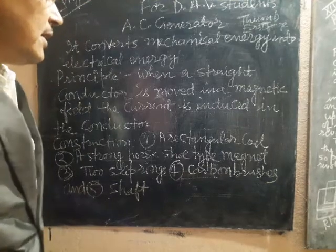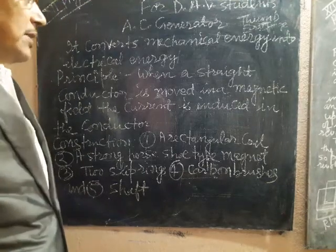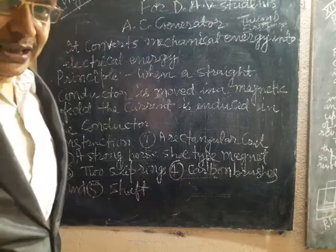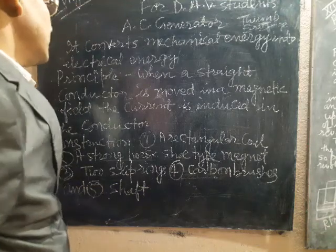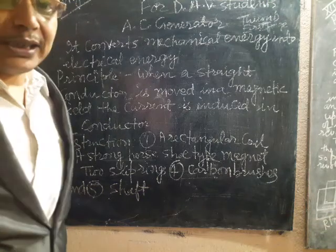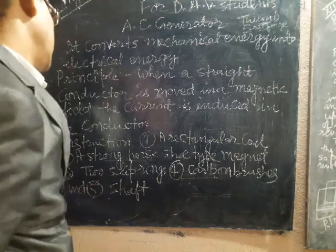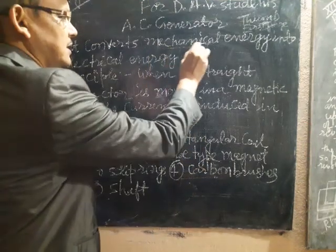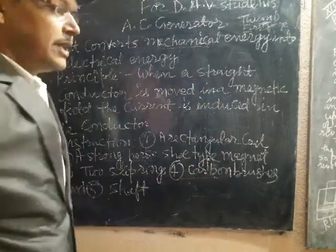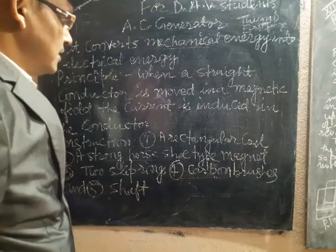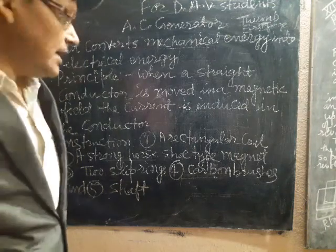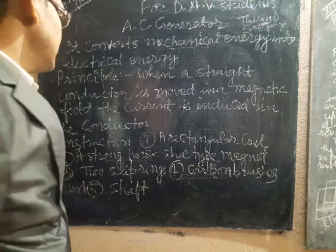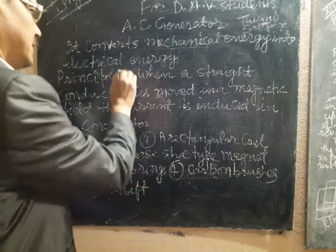AC generator: it converts mechanical energy into electrical energy. Energy obtained by a machine is mechanical energy, while energy obtained by electricity is known as electrical energy.